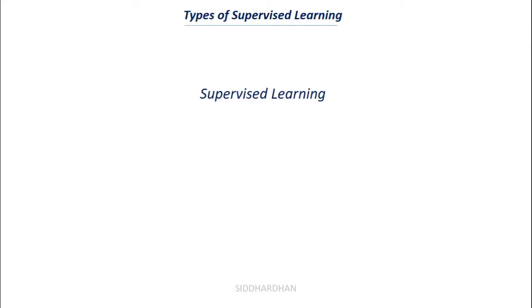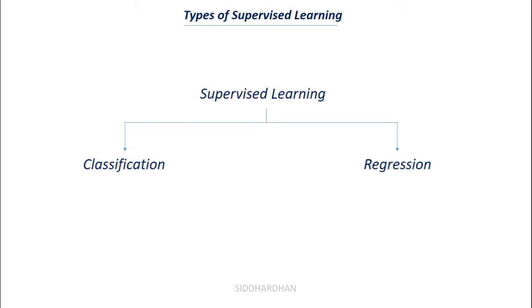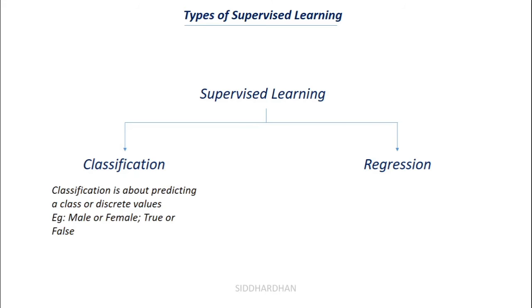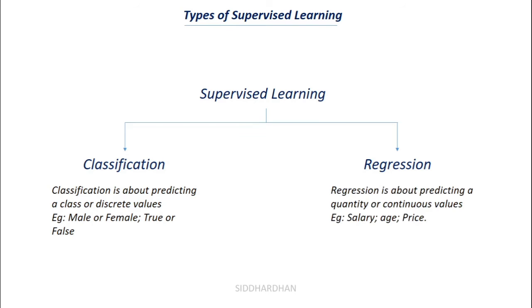Now let's discuss the types of supervised learning. There are two main types: classification and regression. Classification is about predicting a class or discrete value — not continuous numbers. For example, predicting whether something is male or female, or true or false. There are only distinct classes involved.